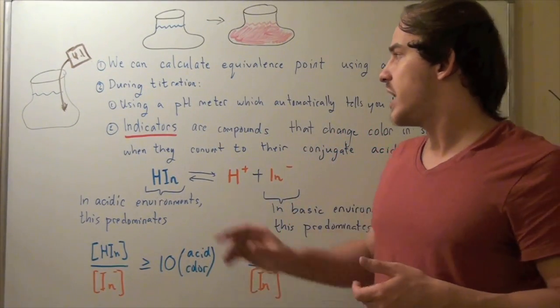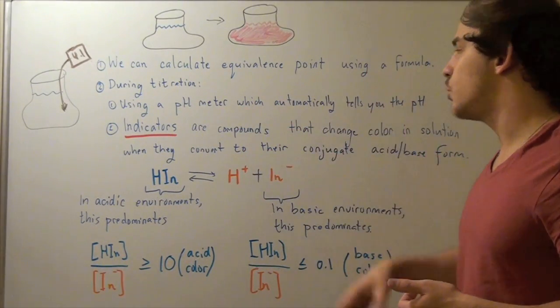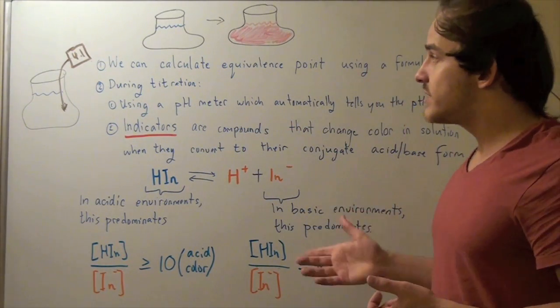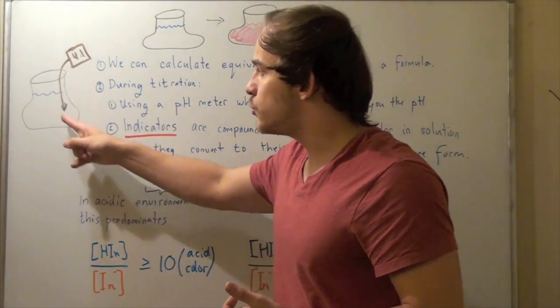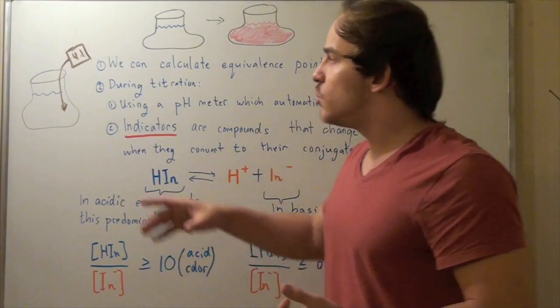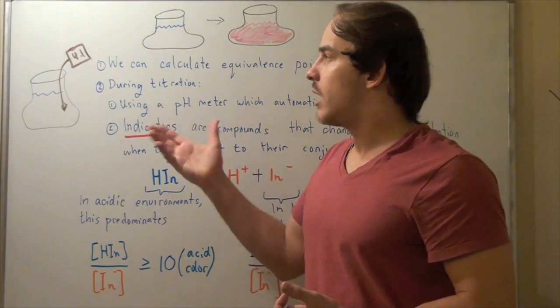The first thing you use is a pH meter. The pH meter will automatically tell you the pH of your solution. For example, suppose this is your pH meter and it's attached to your solution. At any given time, you can look at it and it will tell you the pH of your buffer solution.